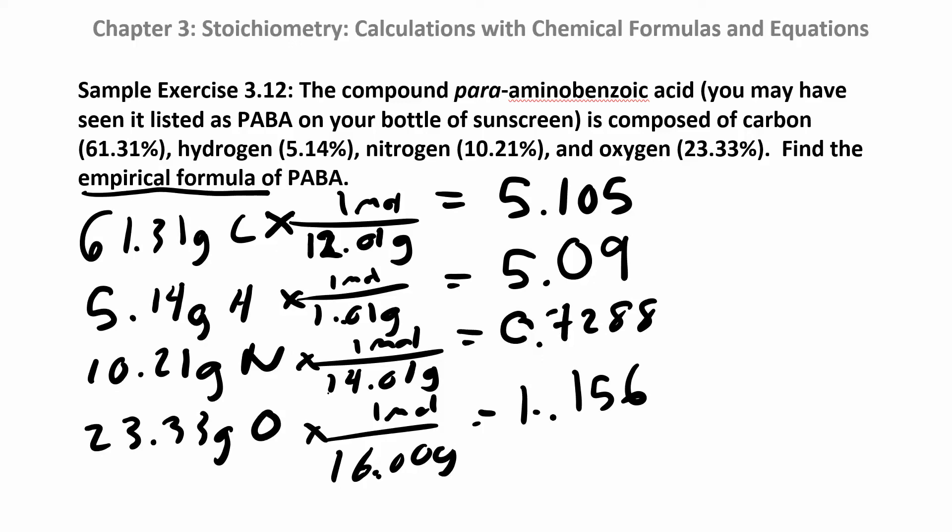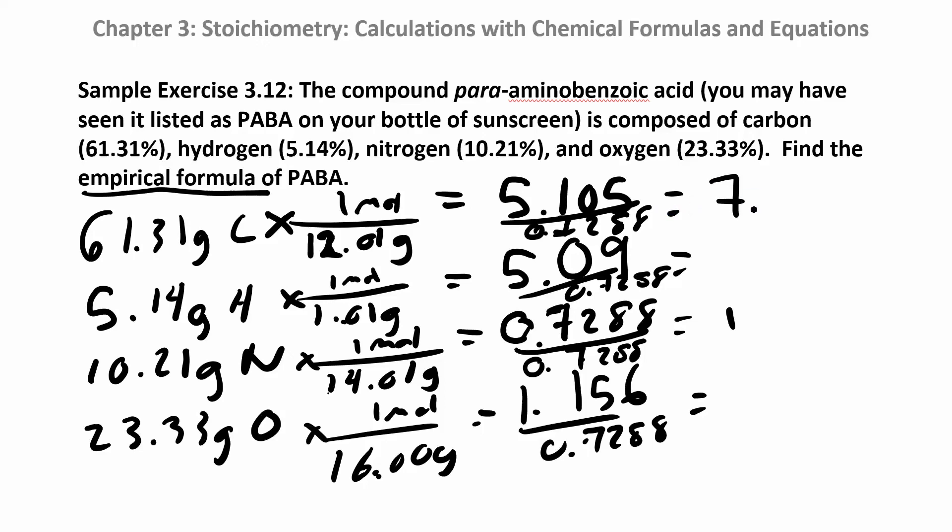Now to find the simplest molar ratio, we're going to divide everyone by the smallest number of moles, which is the 0.7288. Everybody gets divided by the smallest number of moles, and you end up with about 7, about 7, exactly 1, and about 2. So the empirical formula for this one is CHNO, and I have 7 carbons, so that becomes my subscript, 7 hydrogens, 1 nitrogen, and 2 oxygens. So that's the empirical formula, that's the simplest molar ratio of atoms in this compound.